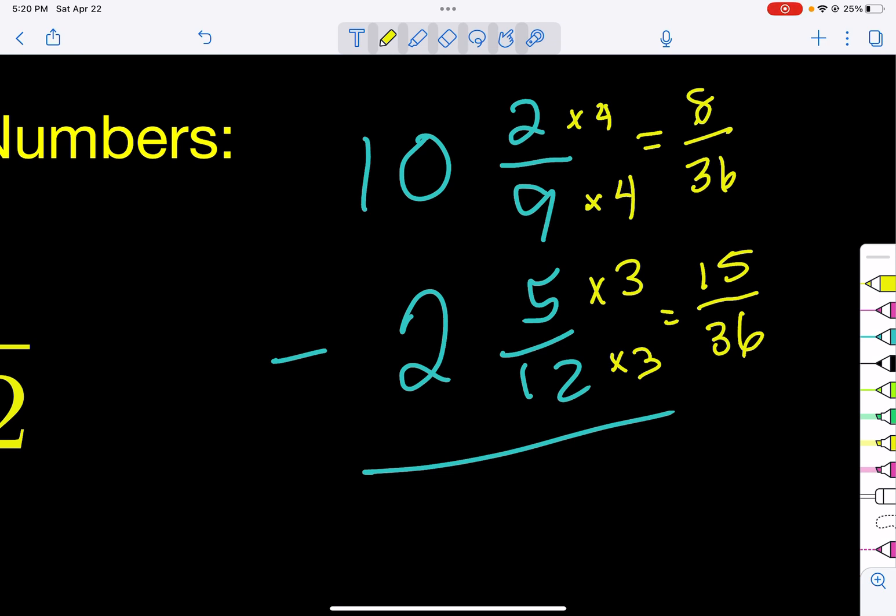thing we're going to check for is: do we have enough to subtract? Meaning, is this number bigger than that number? Well it isn't. 8 is not bigger than 15, so here's an example where we have to borrow. How do you do it? Just like anything, we're going to go to the whole number spot right here and we're going to take one off. So we're going to borrow from the 10 and make it 9. Now